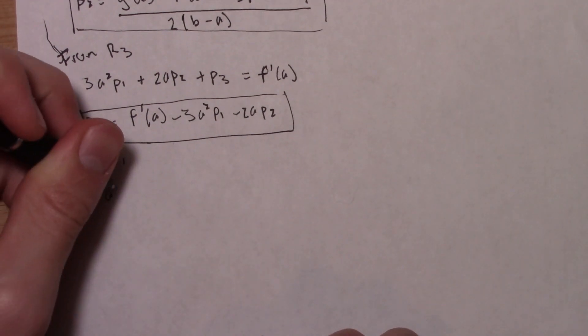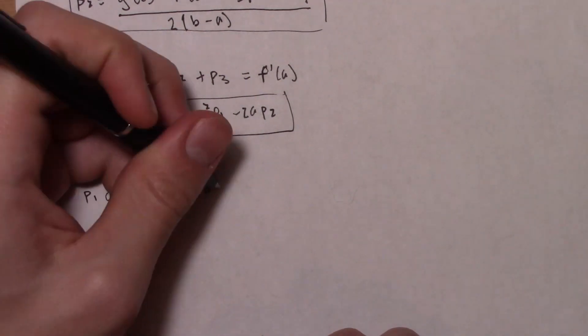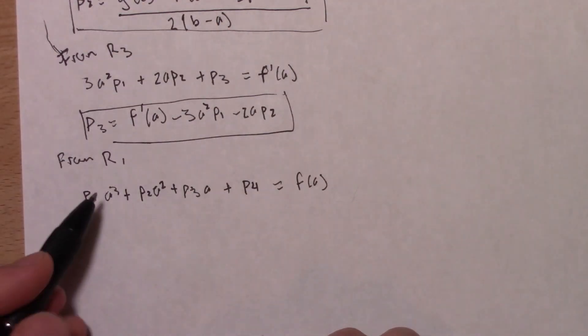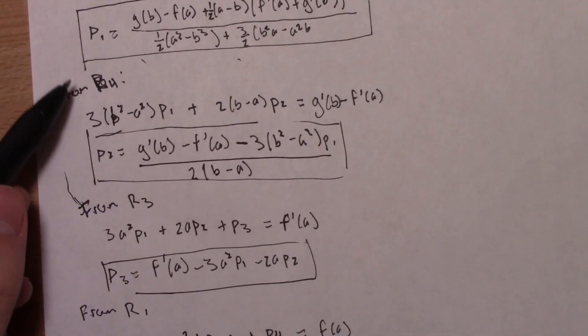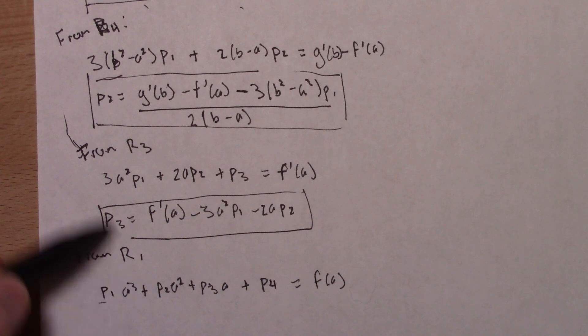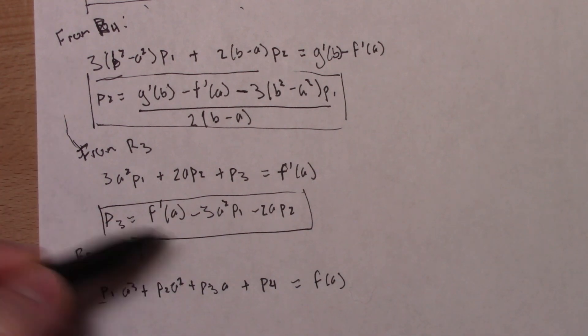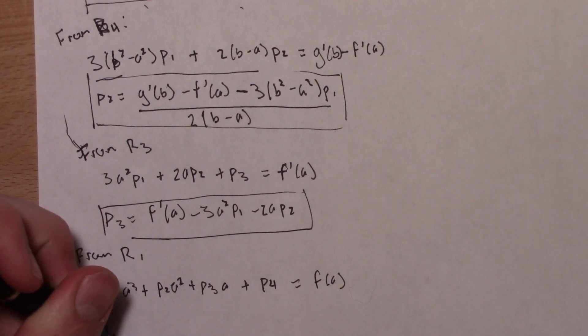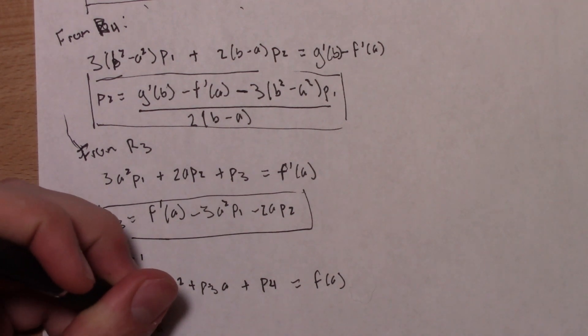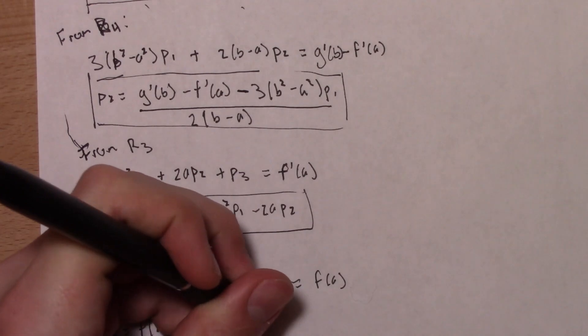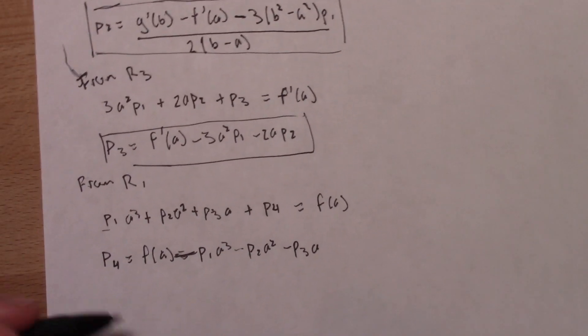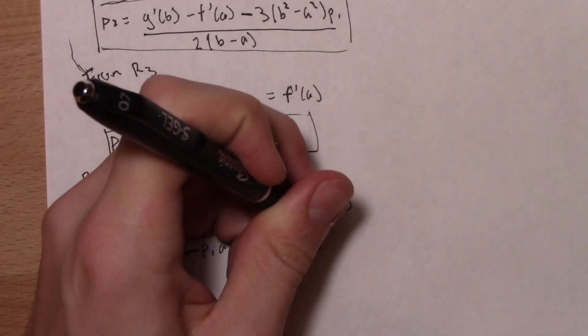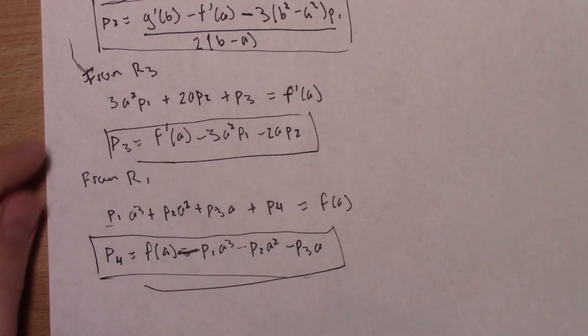And the fourth parameter from row one: p1 a cubed plus p2 a squared plus p3 a plus p4 equals f of a. We found p1, we found p2, we found p3. P4 is unknown. We can solve for that. P4 equals—and that's the final parameter we're looking for.